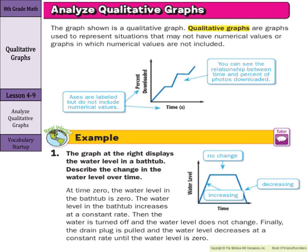In example one, the graph displays the water level in a bathtub. Describe the level of change in the water level over time. Starting at time zero, the water level is zero. Then it increases at a constant rate — we know it's constant because the line is linear. Then there's no change; we're not increasing or decreasing, so it's just flat. Then it decreases — the water level goes down. That makes sense if you think of giving a bath: the water level increases as you fill the tub, there's no change during the bath, and then it decreases as you pull the plug and drain the water.